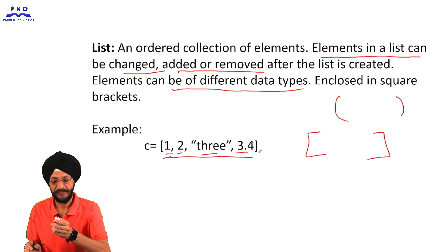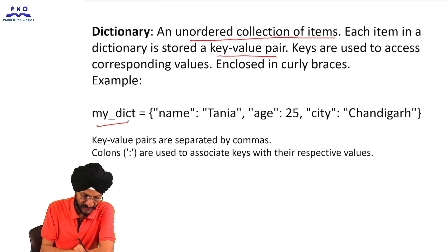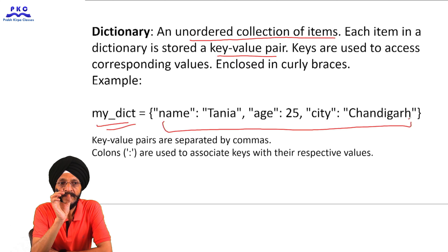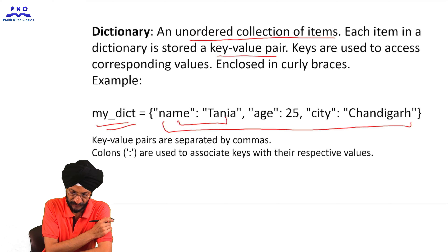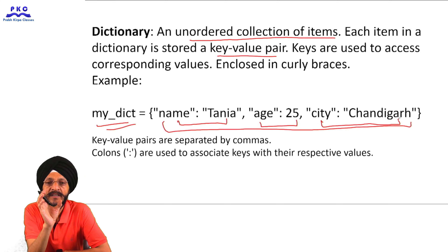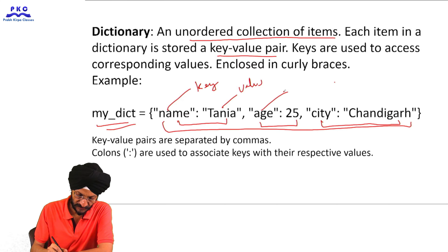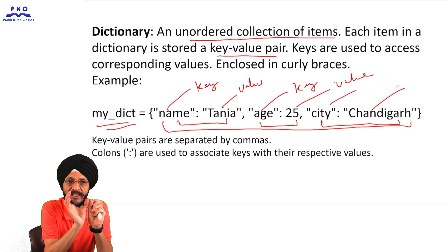A dictionary is an unordered collection of items. Each item in a dictionary is stored as a key-value pair. For example, variable 'my_dictionary' has items: name is the key and Tanya is the value, age is the key and 25 is the value, city is the key and Chandigarh is the value. Items are enclosed in curly braces, key-value pairs are separated by commas, and colons associate keys with their respective values.